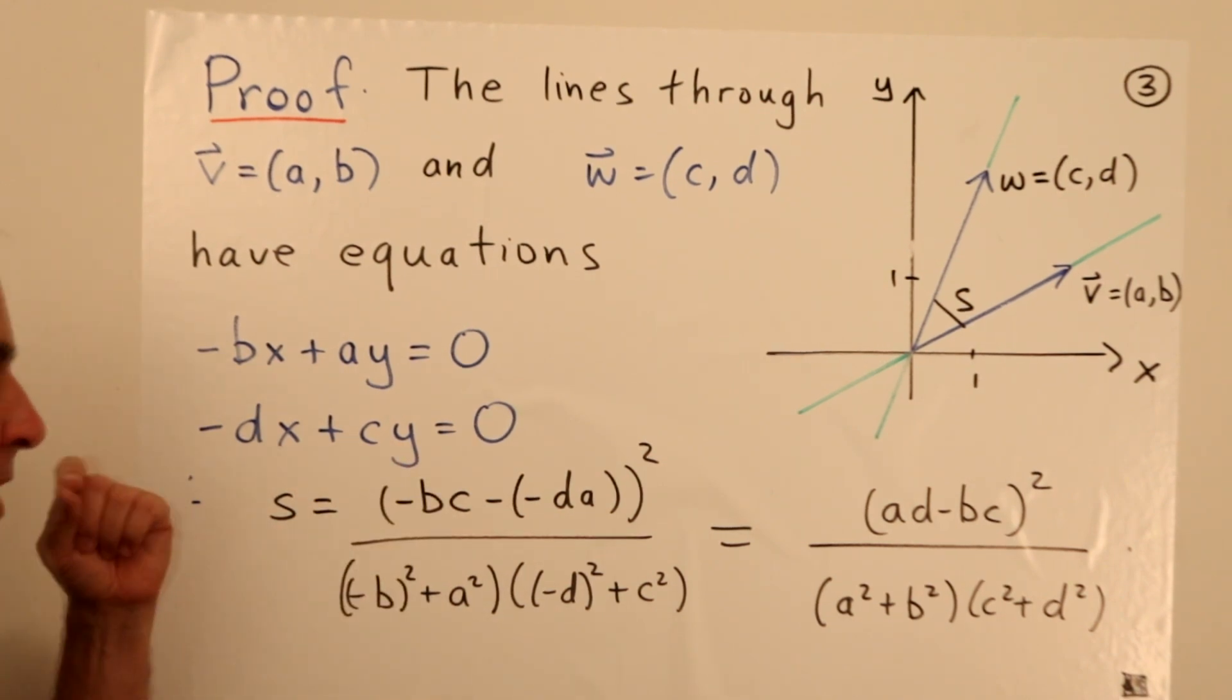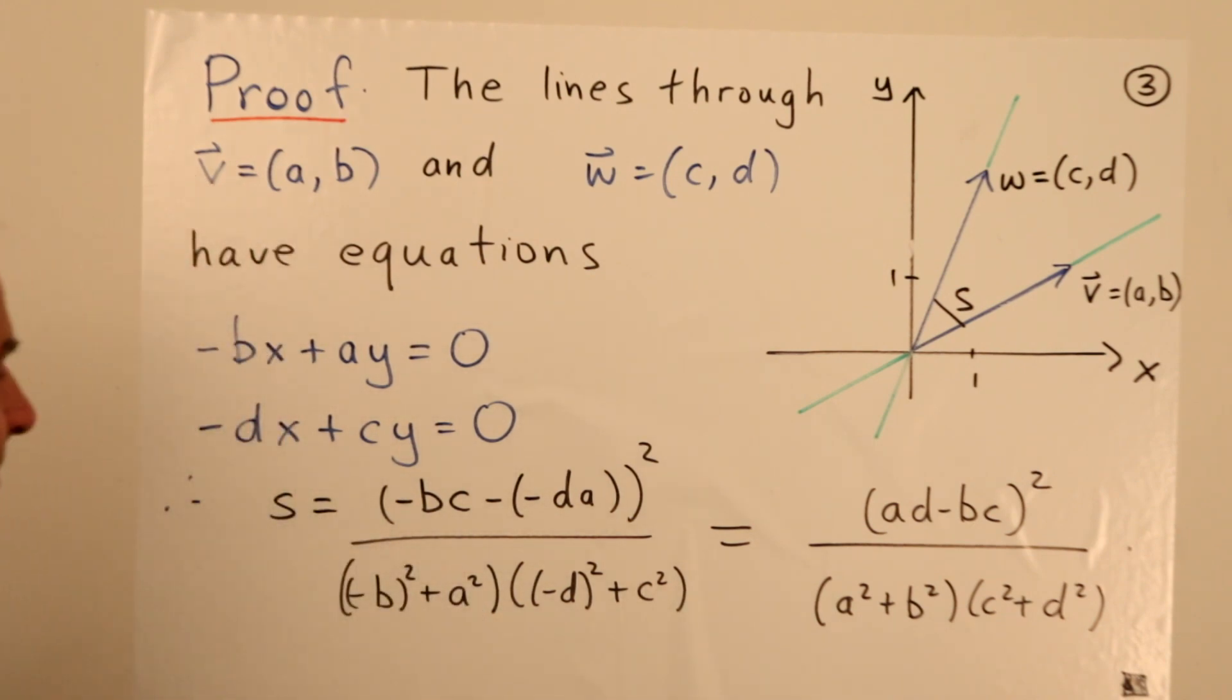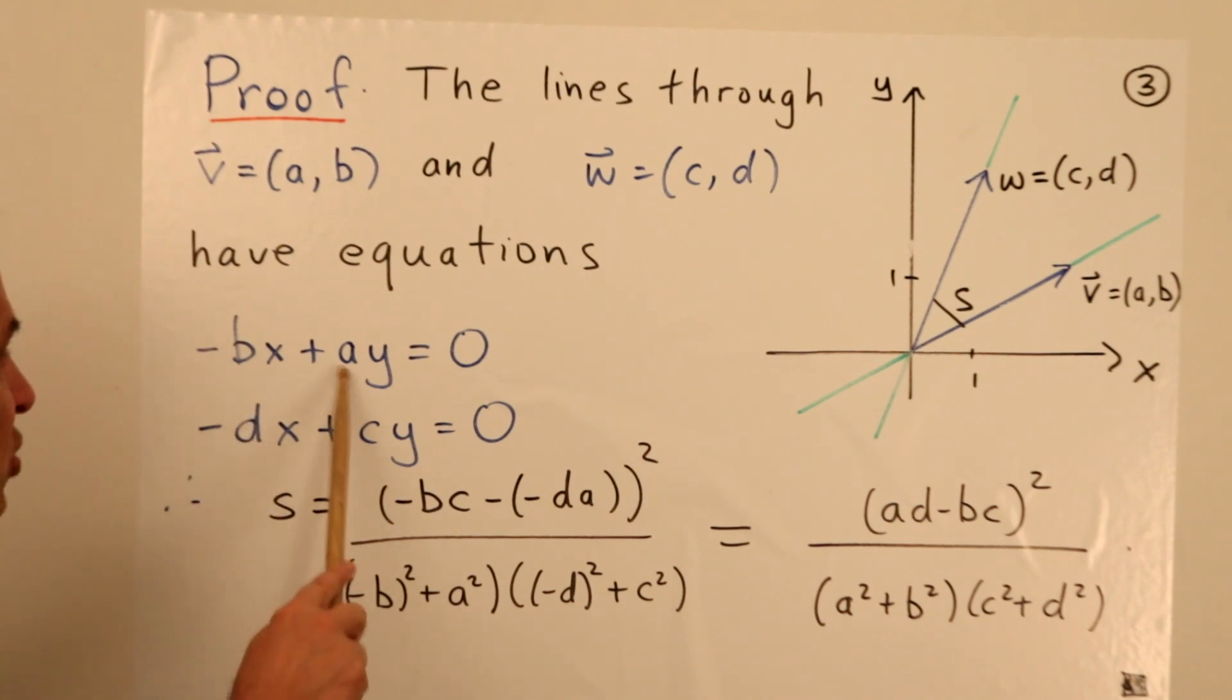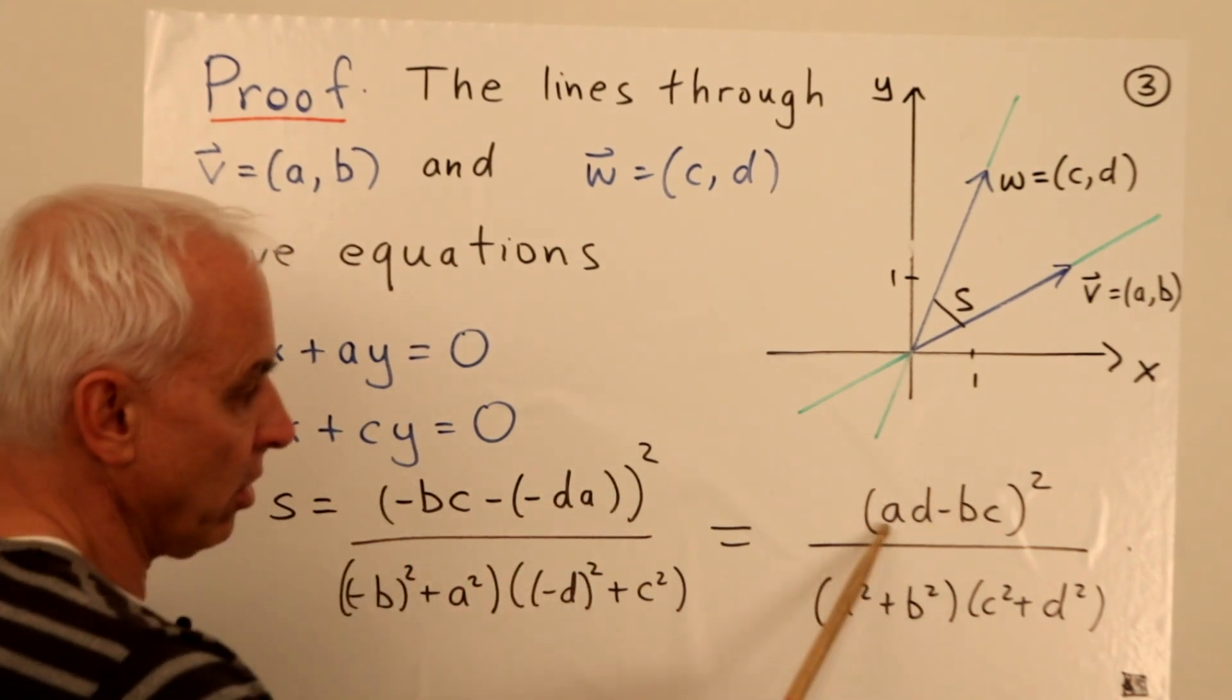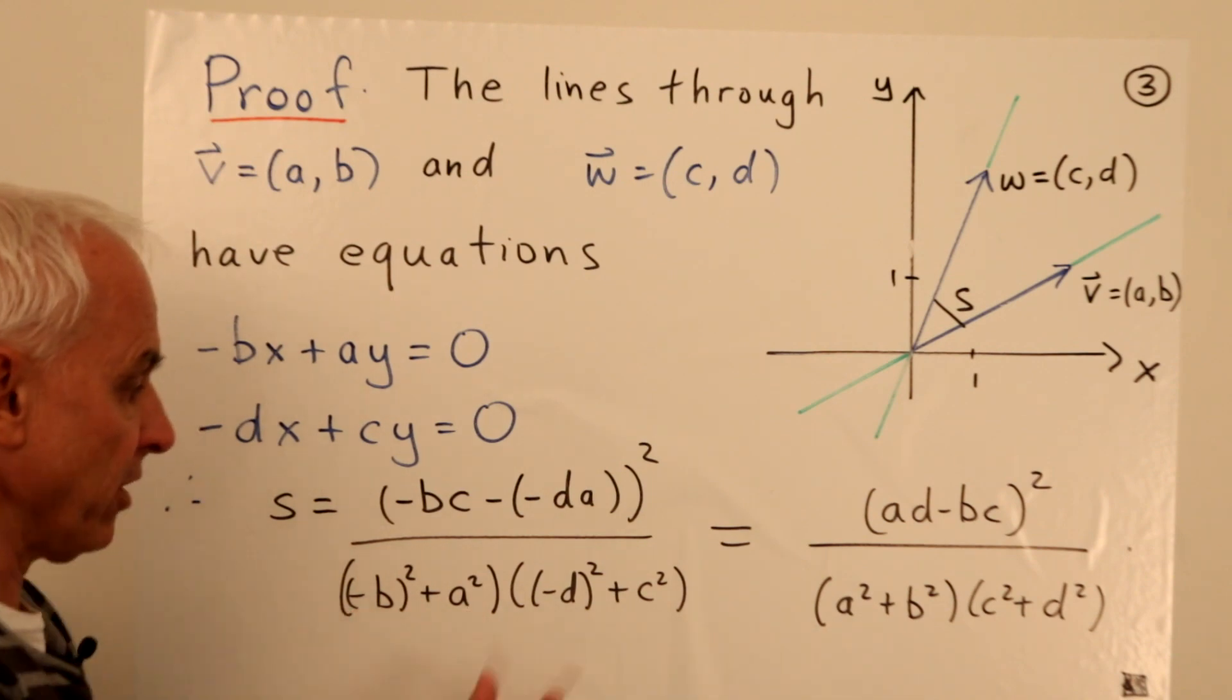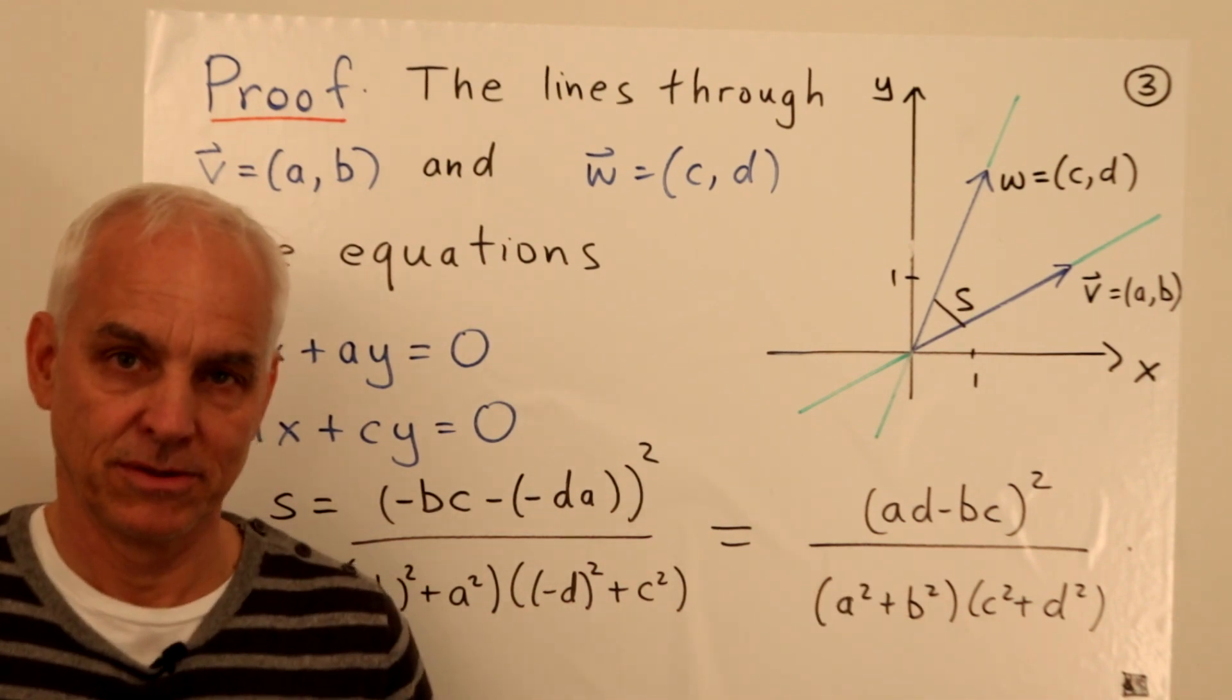OK, so now we know what the spread between these two lines is because we can apply the equation that we know for the spread between two lines. What do we do? Well, we take this thing here times this thing here, and we subtract the product of this times this, and we square all of that. And then we divide by this coefficient squared plus this coefficient squared times this coefficient squared plus this coefficient squared. And we've just unraveled this here inside. We have AD minus BC. So all of that is AD minus BC squared in the numerator. And then the denominator becomes A squared plus B squared, C squared plus D squared. So this is indeed the correct formula for the spread created by two vectors.